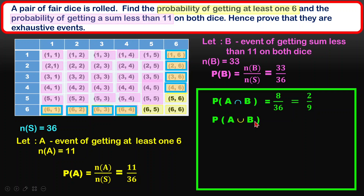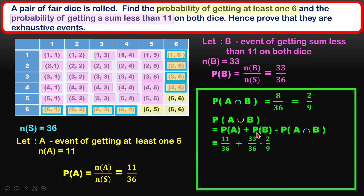Now we calculate P(A∪B) to check if it totals to one. Using the addition formula: P(A∪B) = P(A) + P(B) − P(A∩B). Substituting in: 11/36 + 33/36 − 2/9. When we calculate this, the answer is exactly 1. Since the question says 'hence prove,' we use the intersection result from the previous part to confirm the union equals one.